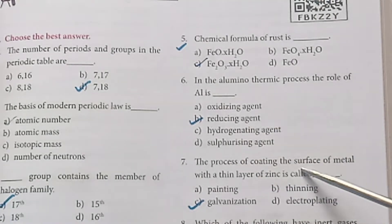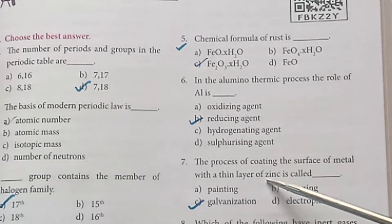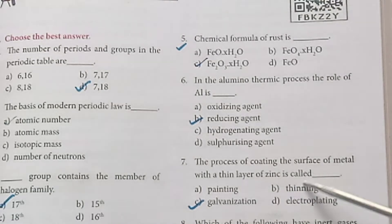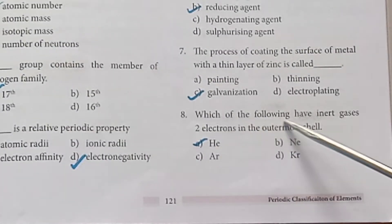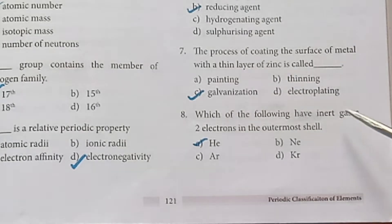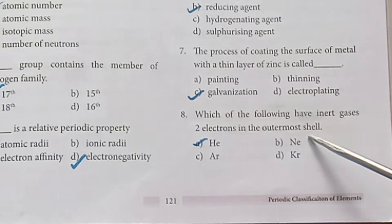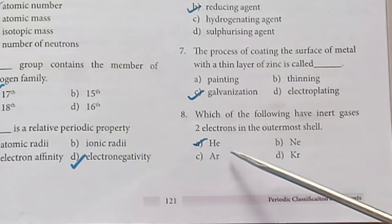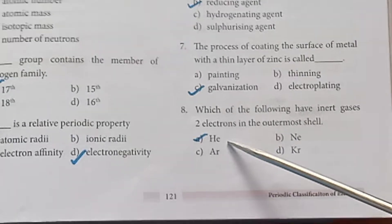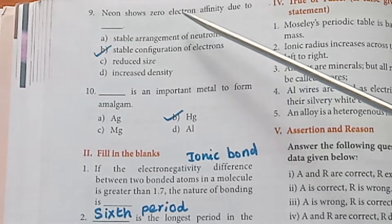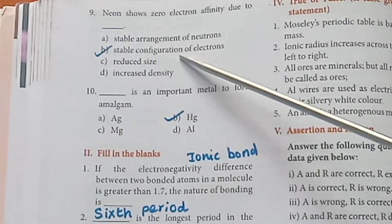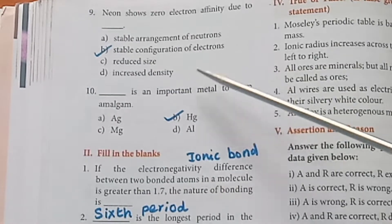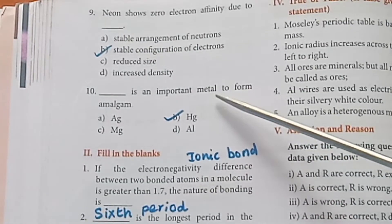The process of coating the surface of metal with a thin layer of zinc is called galvanization. Helium (He) has 2 electrons in the outermost shell among inert gases. Neon shows zero electron affinity due to stable configuration of electrons. Mercury (Hg) is an important metal used to form amalgam.